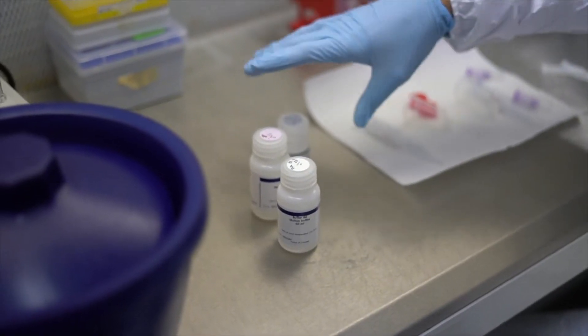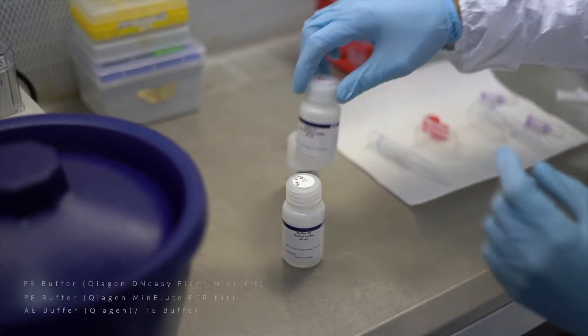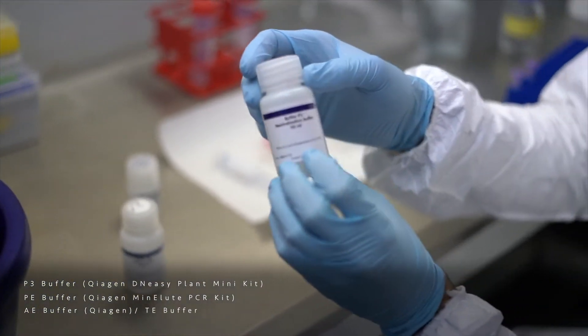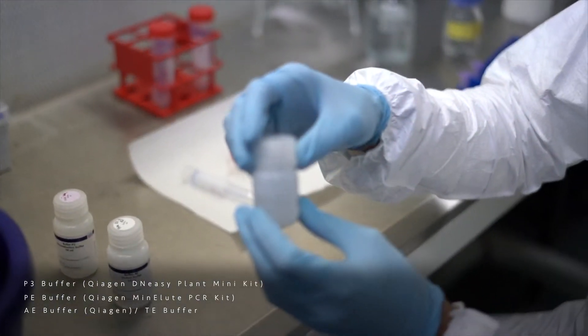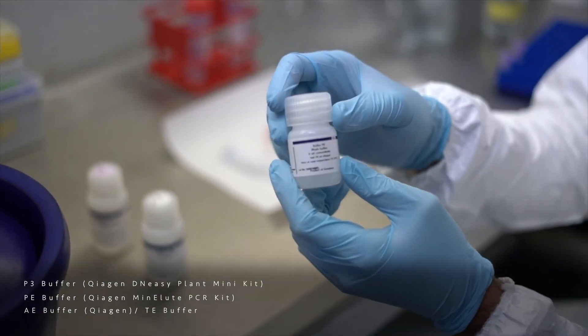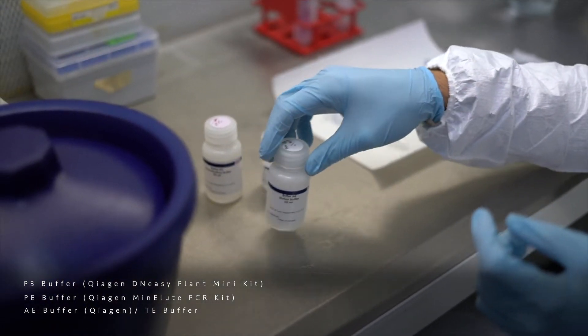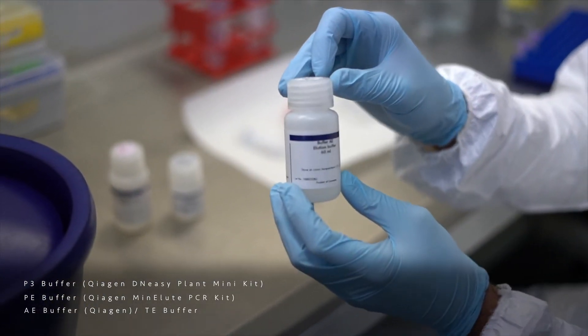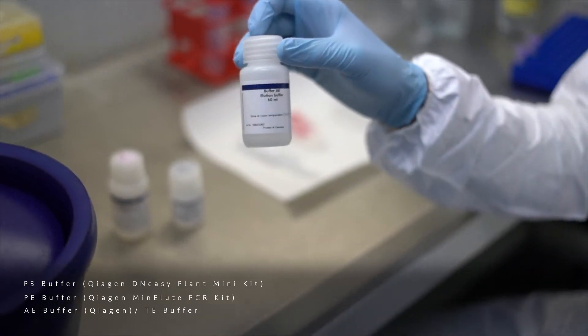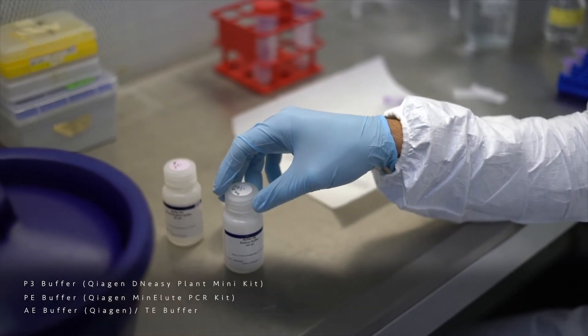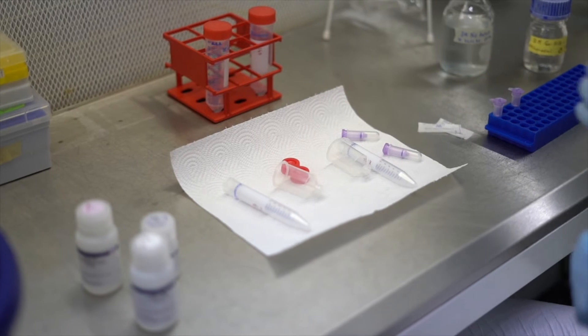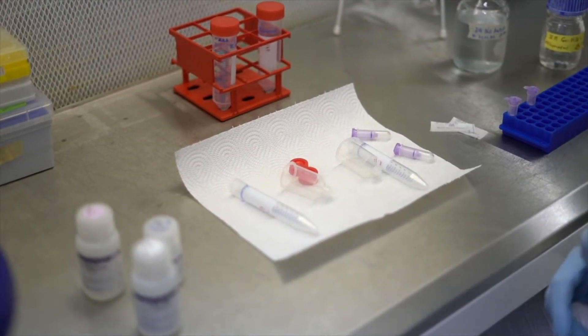We will need also three other buffers: the P3 buffer from a Qiagen extraction kit, PE buffer also from Qiagen MinElute kit, and finally for elution we are using an AE buffer also from a Qiagen plant mini kit. But actually you can also use the TE buffer if you want. Good, let's build then the binding apparatus.